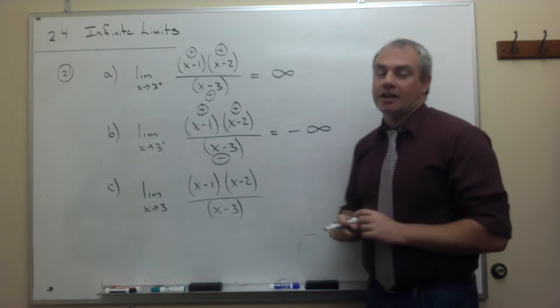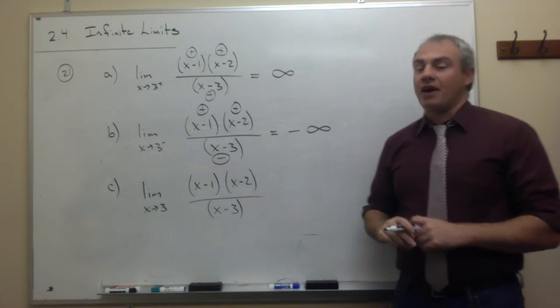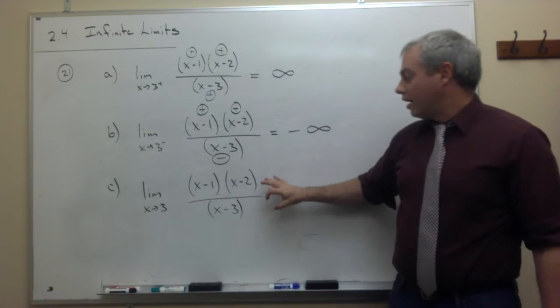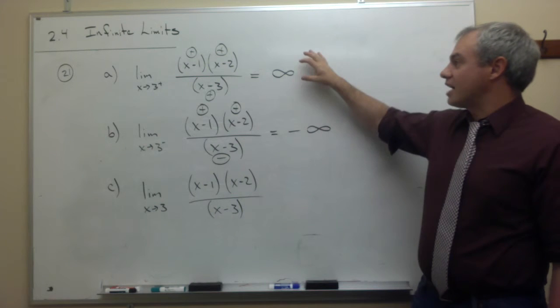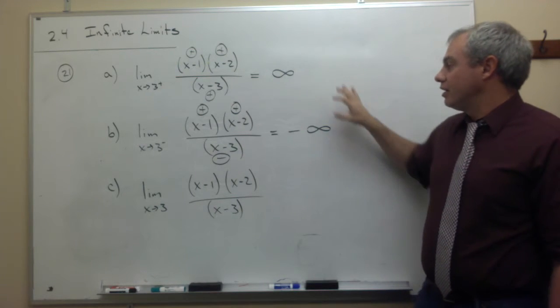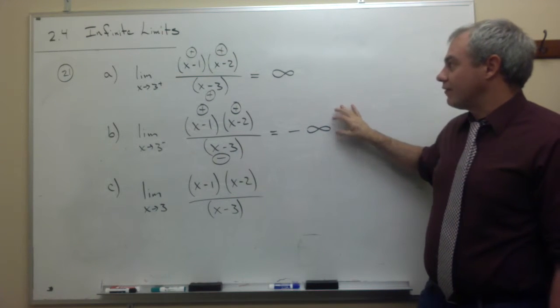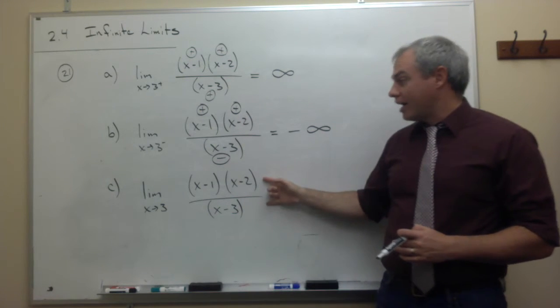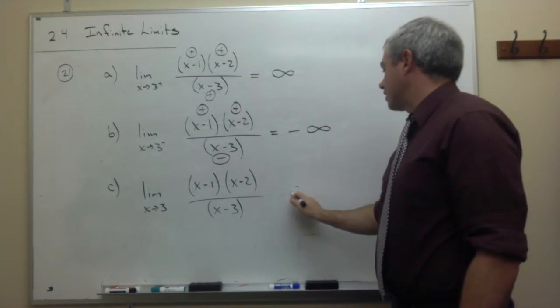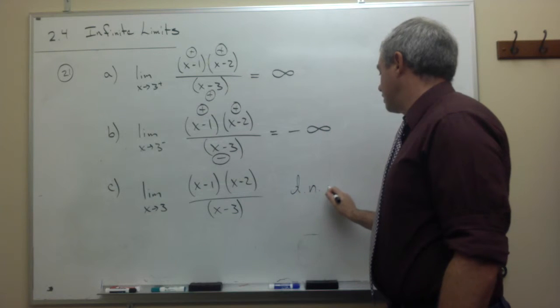So, we're looking at negative infinity. If I want to look at the limit as x goes to 3 of this function, well, one side was positive infinity. The other side was negative infinity. They do not agree. So, this thing does not have a limit. And we can say that this limit does not exist.